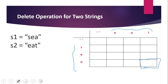Let's start from cell 1. We compare an empty string with an empty string — no common subsequence, so we start with 0. Moving on, we check the common things between an empty string and the substring 'e' — nothing, so we put 0. Similarly, 'ea' and an empty string gives 0, and 'eat' and empty string is also 0. Filling the column: comparing empty string and 's', 's-e', and 's-e-a' with empty string all give 0. The first row and column are all zeros.